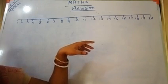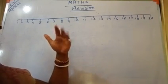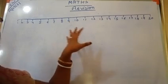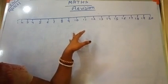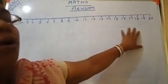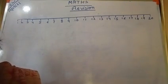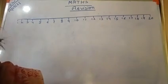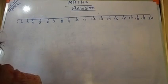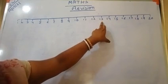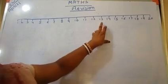Backward counting and before number are likewise the same. If you know the backward counting, you can do before numbers very easily. We will do the before numbers from 20 to 1. Before number means the front number.